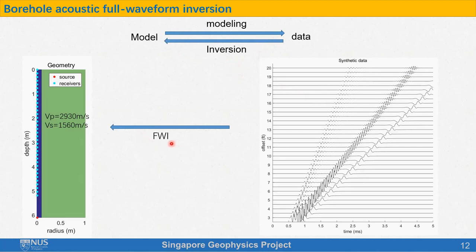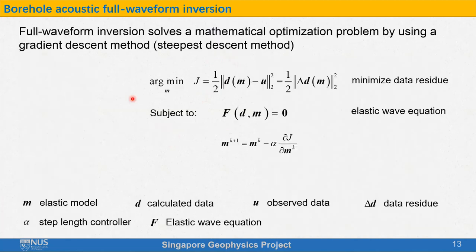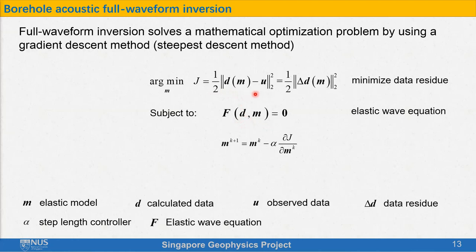Full waveform inversion or FWI is one method of inversion — and actually, tomography is also a kind of inversion. FWI solves a mathematical optimization problem whose objective function is to minimize the difference between the calculated data and the real data within the constraint of elastic wave equations. This means we can find a velocity model and obtain synthetic data by modeling, then compare the calculated data with the observed data. The difference between the data is called data residual. If the L2 norm of the data residual is small, this means the velocity model we find is close to the real model.